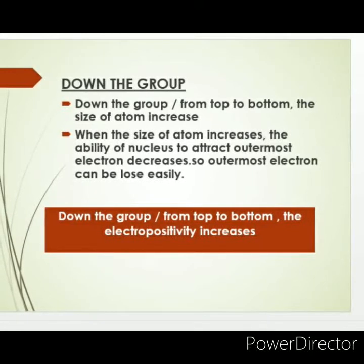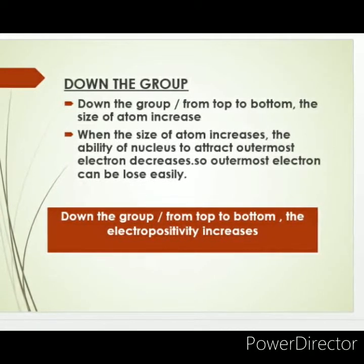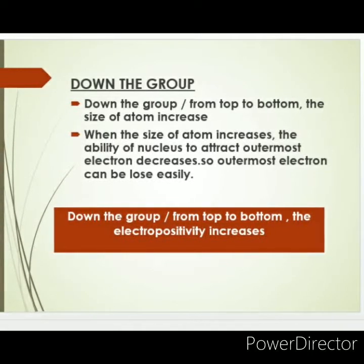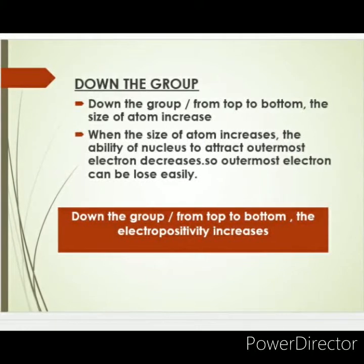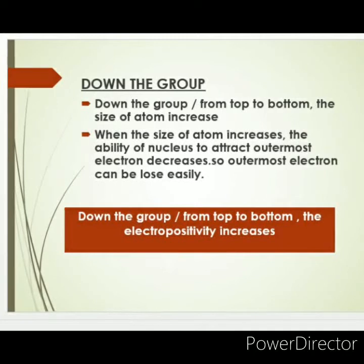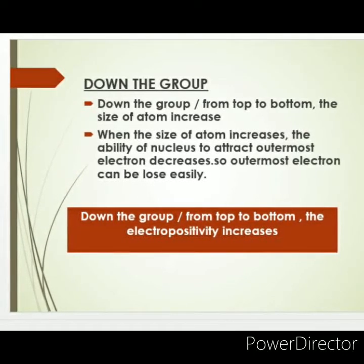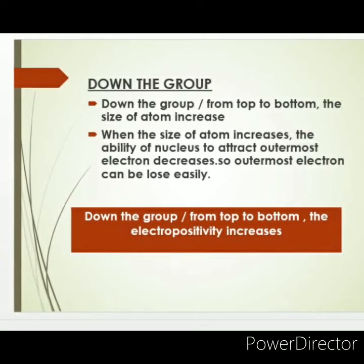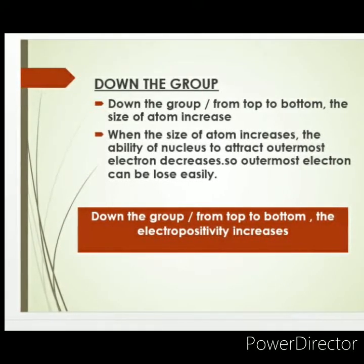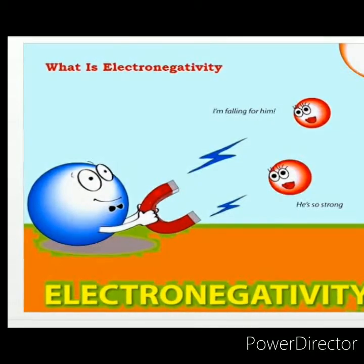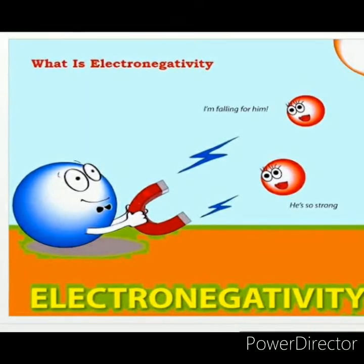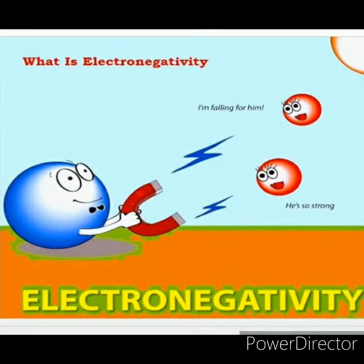The next concern is what happens to electropositivity if you move down the group, from top to bottom. Down the group, the size of the atom increases. When the size of an atom increases, the ability of the nucleus to attract the outermost electron decreases, so the outermost electron can be lost easily. We can conclude that down the group, from top to bottom, electropositivity increases.